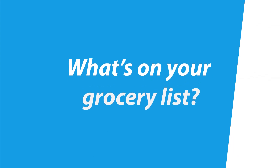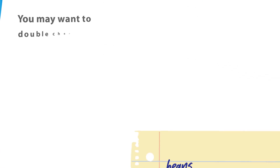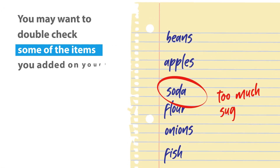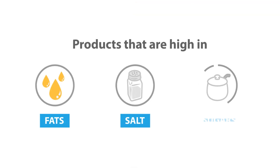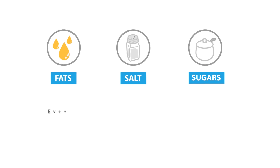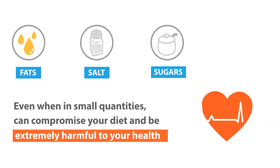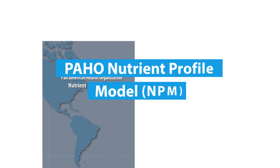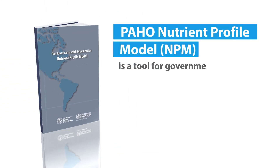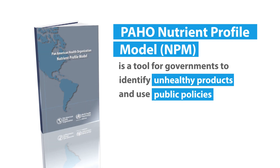What's on your grocery list? You may want to double-check some of the items you added. Products that are high in fats, salt, and sugars — even in small quantities — can compromise your diet and be extremely harmful to your health. The PAHO Nutrient Profile Model provides a tool for governments to identify unhealthy products and